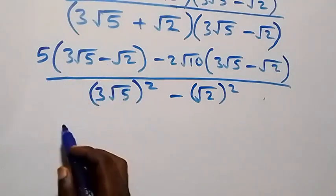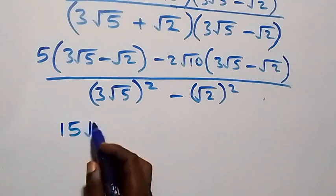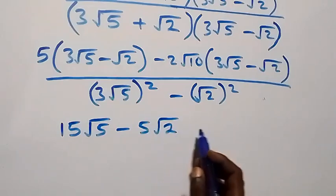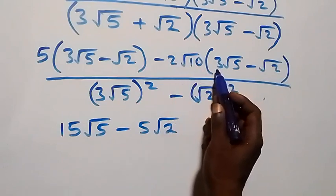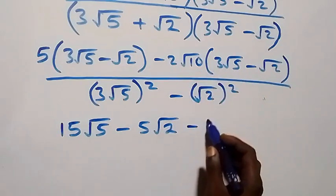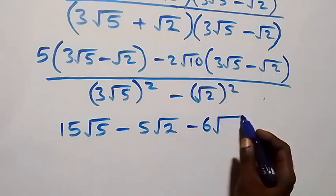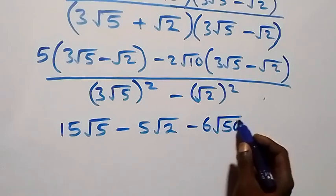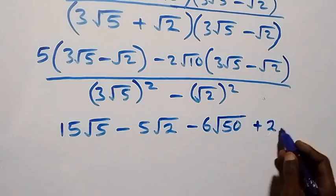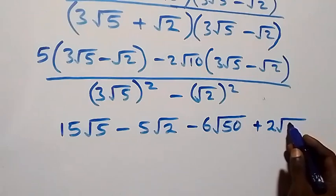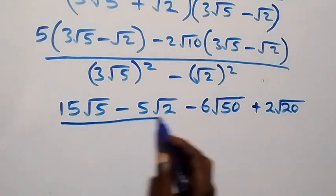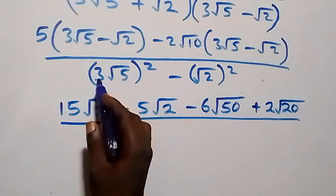We get five times three — that's 15 root five — then minus five root two, then minus two root ten times three root five, which gives minus six root 50, then plus two root ten times root two, which gives plus two root 20, all divided by the denominator.